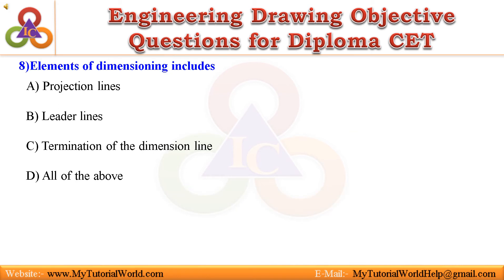Question 8: Elements of dimensioning includes — A. Projection lines, B. Leader lines, C. Termination of the dimension line, D. All of the above. Answer is All of the above.